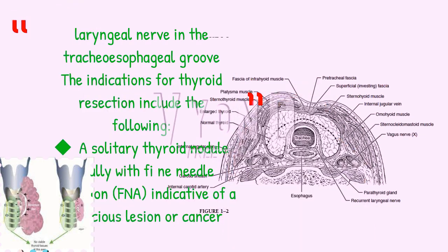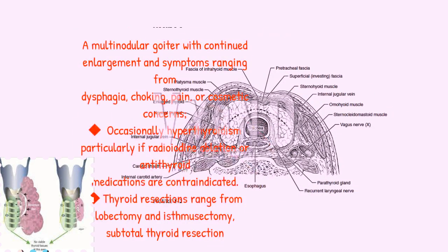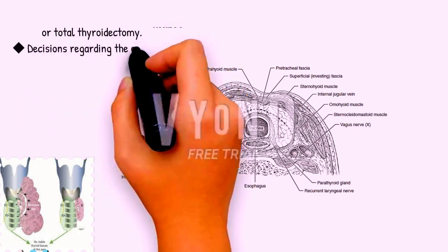Indications for thyroid resection include: a solitary thyroid nodule, usually with fine needle aspiration (FNA) indicative of a suspicious lesion or cancer; a multinodular goiter with continued enlargement and symptoms ranging from dysphagia, choking, pain, or cosmetic concerns; and occasionally hyperthyroidism, particularly if radioiodine ablation or antithyroid medications are contraindicated. Thyroid resections range from lobectomy and isthmectomy to subtotal thyroid resection or total thyroidectomy.